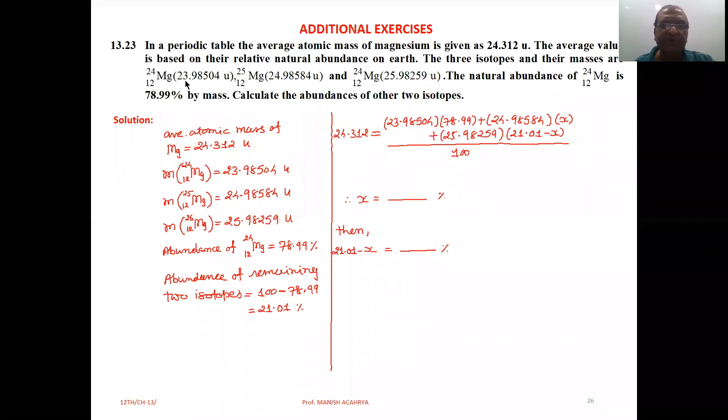its mass 23.98504u, 12mg25, mass is 24.98584u and 12mg26, 25.98259u. The natural abundance of 12mg24 is 78.99% by mass.